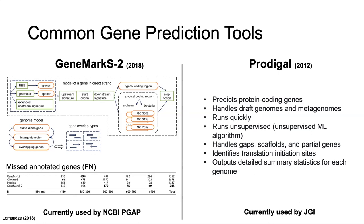GeneMarkS2 is a new version of GeneMarkS, a program over 20 years old. It looks for a ribosomal binding site and promoters upstream of your start codon, then continues to follow the signal until it reaches the stop codon. One thing unique about GeneMarkS2 is that it has the normal pipeline for genes — the typical coding region when there are no mistakes or issues.